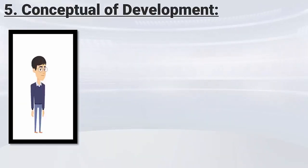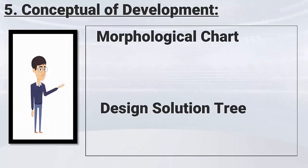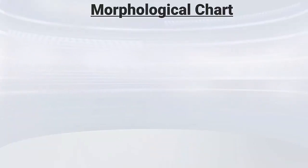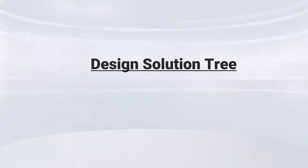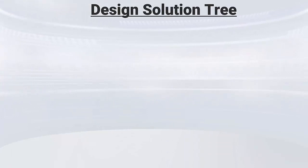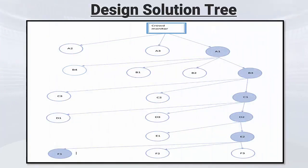We have prepared our device, but we need to improve it. For that reason, we will tackle the morphological chart in Solution Space 3 in order to find the optimal solution. The morphological chart represents the functions of the device and the mechanisms which can be used to perform these functions. For instance, for processing data, we have the choice between Arduino Uno, Raspberry Pi, or human interference. After, we connect all of these mechanisms together and present the possible solutions represented in Solution Space 3.